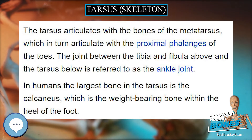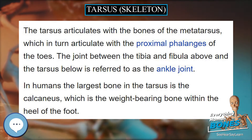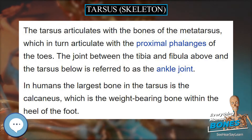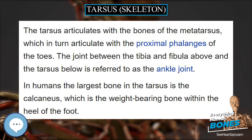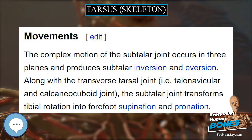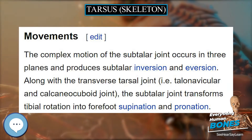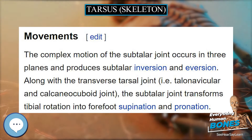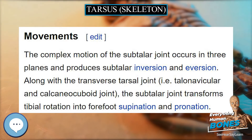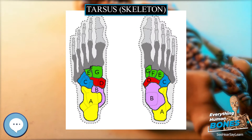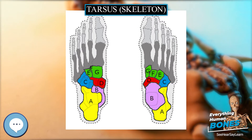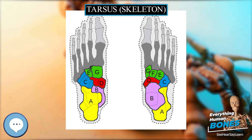The five irregular bones of the midfoot — the cuboid, navicular, and three cuneiform bones — form the arches of the foot, which serve as a shock absorber. The midfoot is connected to the hind and forefoot by muscles and the plantar fascia.